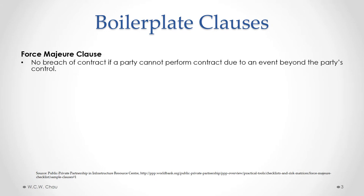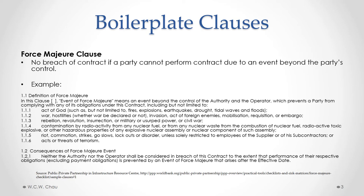Standard form contracts often include a number of different boilerplate clauses, including exclusion clauses, which we've already looked at, and also a number of other different ones. One type of boilerplate clause is called a force majeure clause. This type of clause essentially says that there is no breach of contract if a party cannot perform a contract due to an event beyond the party's control. Such an event would usually be what's called an act of God, like a storm, a tornado, or an earthquake, or other events that are outside the party's control.